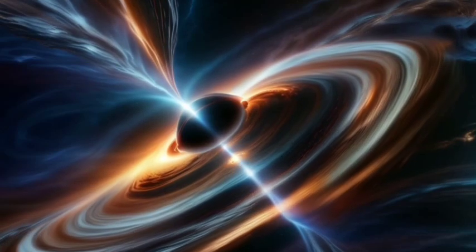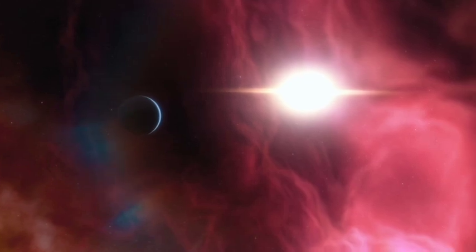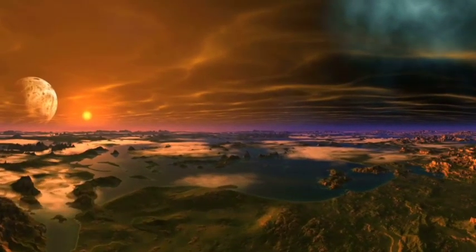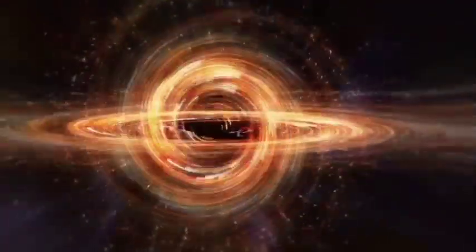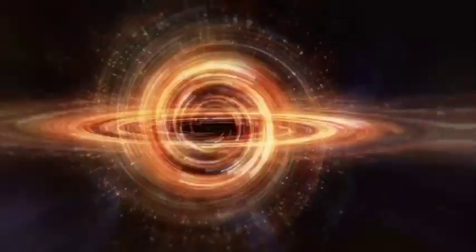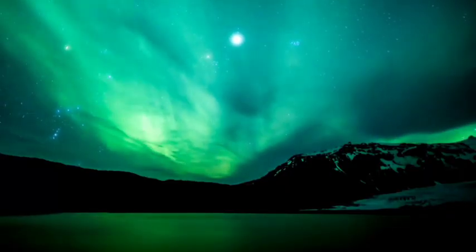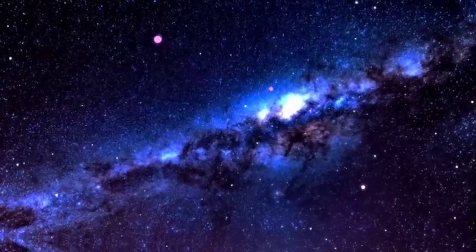One type of exoplanet that has caught the attention of space scientists is the gas giant. These planets are similar in composition to Jupiter and Saturn, but are much larger. Some of these behemoths have been named super-Jupiters, surpassing even the largest planet in our solar system. But that's not all. There are also hot Jupiters, gas giants that orbit very close to their host stars, existing in a scorching world with temperatures that could melt metal. Imagine seeing such a planet up close, with its raging storms and extreme heat.